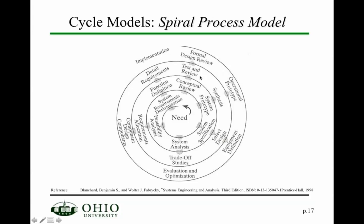There is a strong focus in the spiral model on prototypes. You design a system prototype, synthesize it, then come up with an operational prototype you can actually use in an operational environment, and also evaluate the operational environment. A more detailed paper on the spiral process model has been posted on Blackboard.